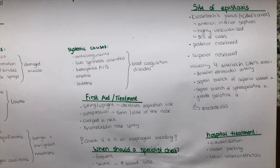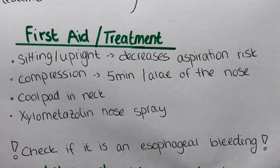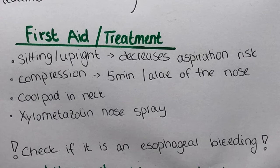Now I want to talk about the treatment. First of all, the first aid treatment which you can also do at home. This is to position the patient in a sitting or upright position, which decreases the aspiration risk. Then compress the ala of the nose for five minutes so that the bleeding, if it is in Little's area, can stop. Also a cool pad on the nose or neck can help to reduce the bleeding by vasoconstriction, or a xylometazoline nose spray which is the commonly used nose spray that also leads to vasoconstriction.